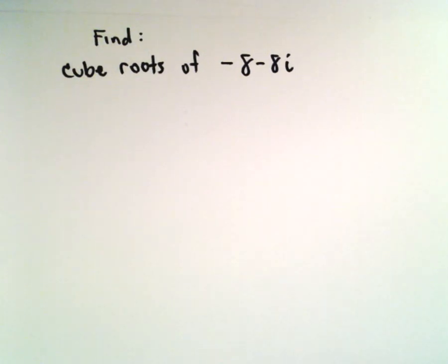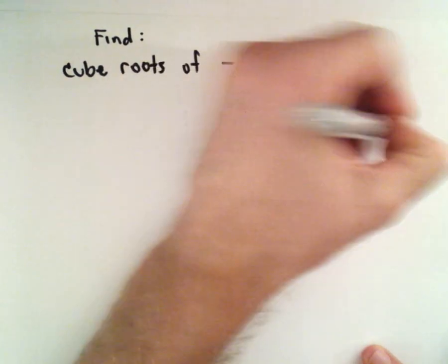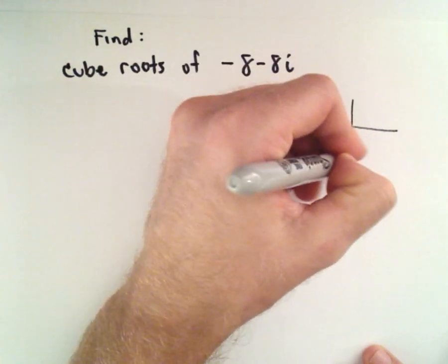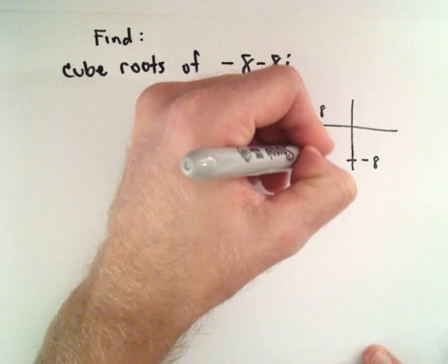Here we're going to find the cube roots of the complex number negative 8 minus 8i. If you think about graphing this complex number, it's going to be sitting down in quadrant 3.